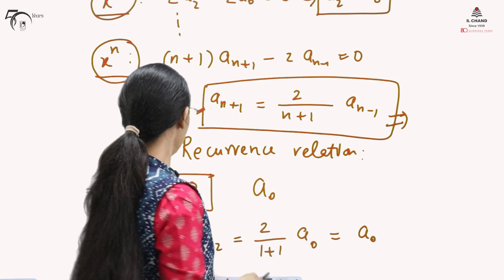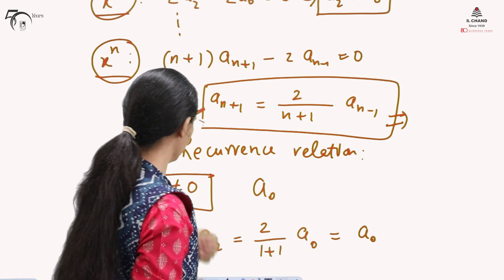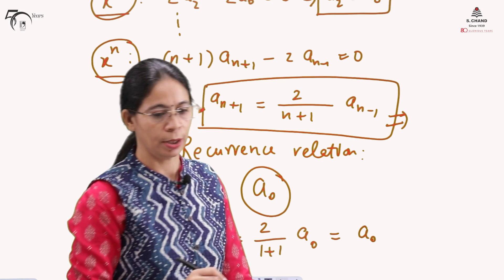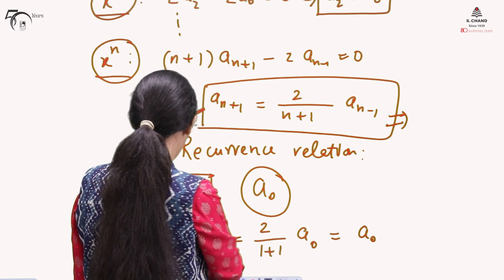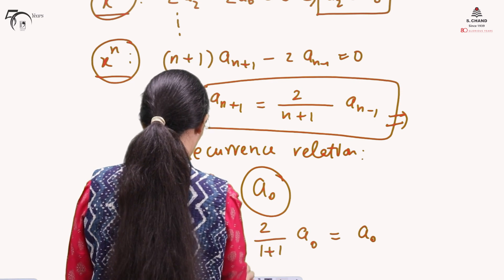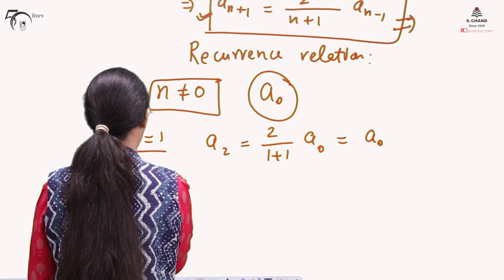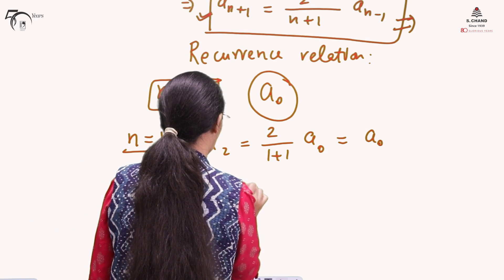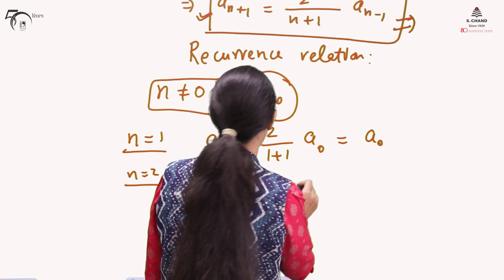So a₀ is retained as an arbitrary constant. For n equals 1 we get a₂ equals a₀. Substituting n equals 2 gives a₃ equals (2/3)a₁.